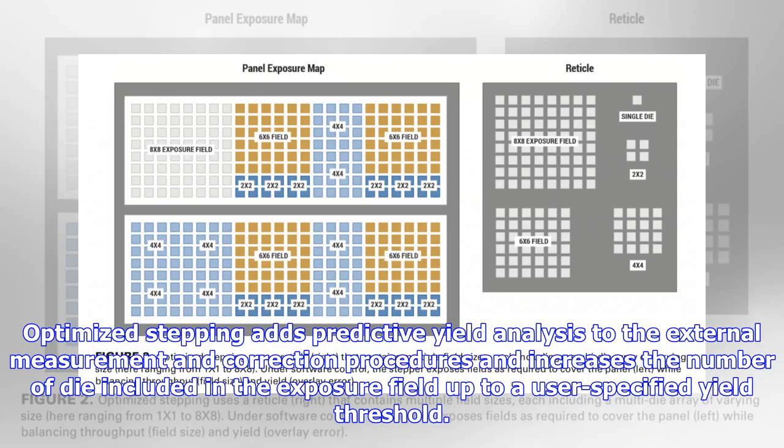Optimized stepping adds predictive yield analysis to the external measurement and correction procedures and increases the number of die included in the exposure field up to a user-specified yield threshold.